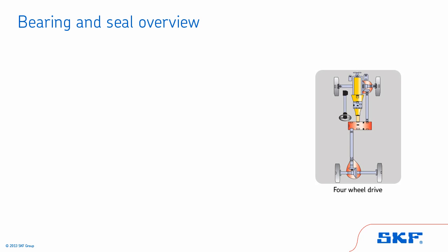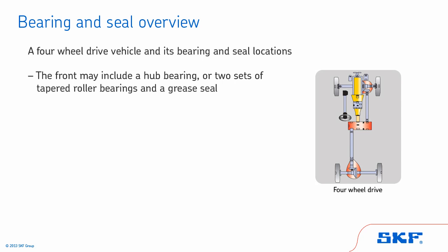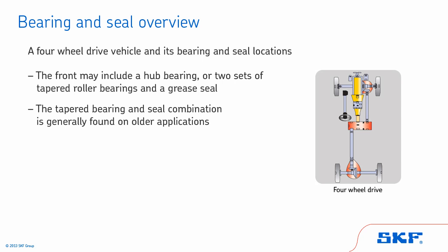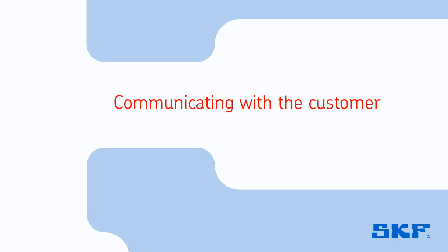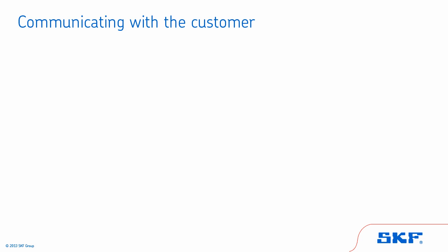This illustration shows a generic layout of a four-wheel drive vehicle and its bearing and seal locations. This type of vehicle also comes with a variety of wheel bearing and seal configurations. On the front, it may have a hub bearing or two sets of tapered roller bearings and a grease seal — again, generally found on older applications. On the rear, it may also have either a hub bearing, hub assembly, cylindrical or tapered roller bearings, and an oil seal on the axle shaft.